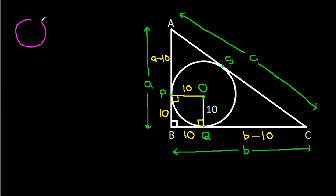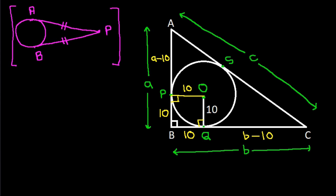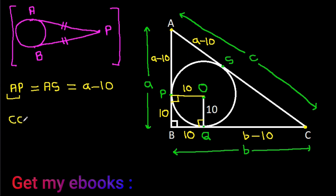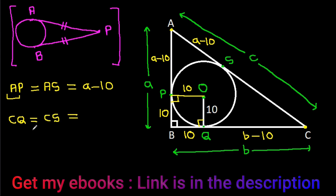Now, in any circle, from any external point P, if we draw two tangents to the circle at points A and B, then PA equals PB. So from point A, AP equals AS, and AP is A minus 10, so AS is also A minus 10. And from point C, CQ equals CS, and CQ is B minus 10, so CS is also B minus 10.